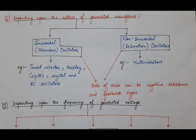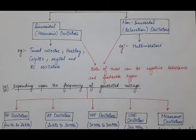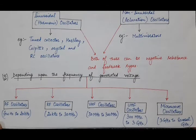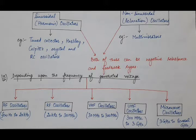As we discussed the first classification — feedback type and negative resistance type — both sinusoidal and non-sinusoidal oscillators can be of either type. The third category of classification of oscillators is based upon the frequency of the generated output signal, and depending upon that, oscillators are divided into 5 types.